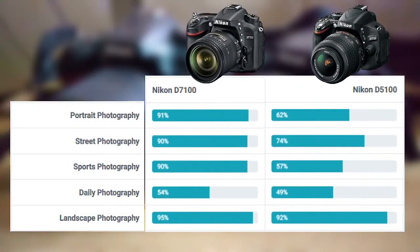Before wrapping up, there is a quick illustration covering the main fields of photography, comparing the performance of the Nikon D5100 and D7100 across five main different shooting categories. This will help you decide which type of shooting you do most often and consider which camera option suits you best before purchasing.